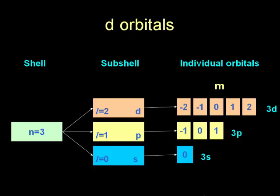Now let us take a look at the D orbitals. We only encounter them in the N equals 3 energy level. This energy level can take on three values for L. Where L equals 2, we have a D subshell with five values for M. And so, we have five individual D orbitals.